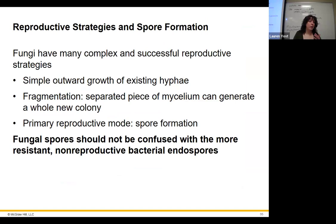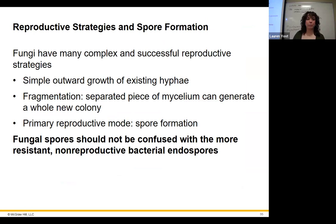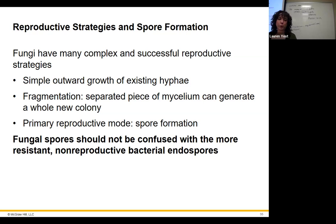Fungi can grow different ways — by continuing to grow out from where they are, by fragmentation (break off a piece and put it on new bread and it'll grow), or by spore formation, which is their primary reproductive mode. Spores can flow in the wind and grow on new substrate. That's their normal way of spreading and reproducing.